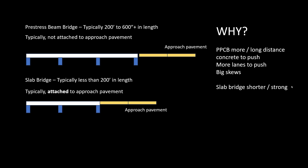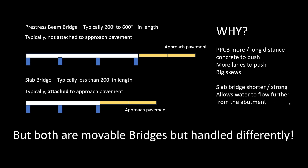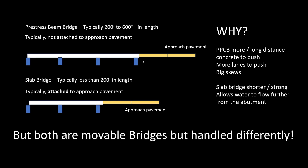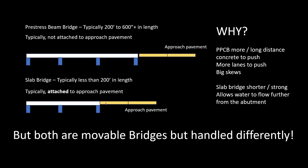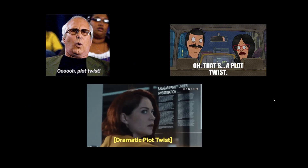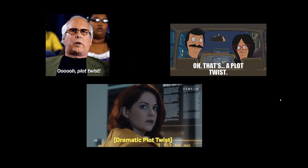Slab bridges are shorter and stronger in a way, and allow water to flow further from the abutment. Both are movable bridges, but handled differently. You can see in the animations the joint closing and opening, and down below it's pushing the approach pavement.